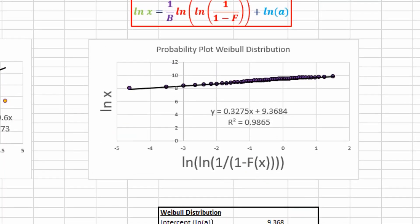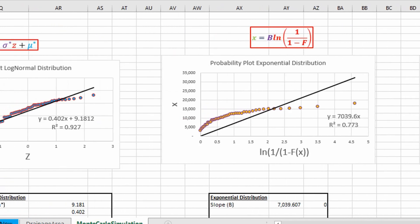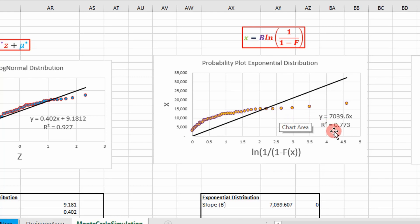That concludes the statistics analysis series where we're modeling our data with distributions by using straight line fits. If we compare these distributions, the Weibull distribution did a great job because the r squared coefficient is close to 1. The exponential distribution did a poor job, but it depends on the data you get.